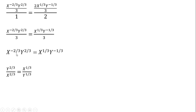Since I don't like negative exponents, X to the minus 2/3 is the same as 1 divided by X to the 2/3, so we move it down into the denominator and lose the minus sign. Similarly on the right-hand side, the negative exponent on Y moves down into the denominator, losing the minus sign.